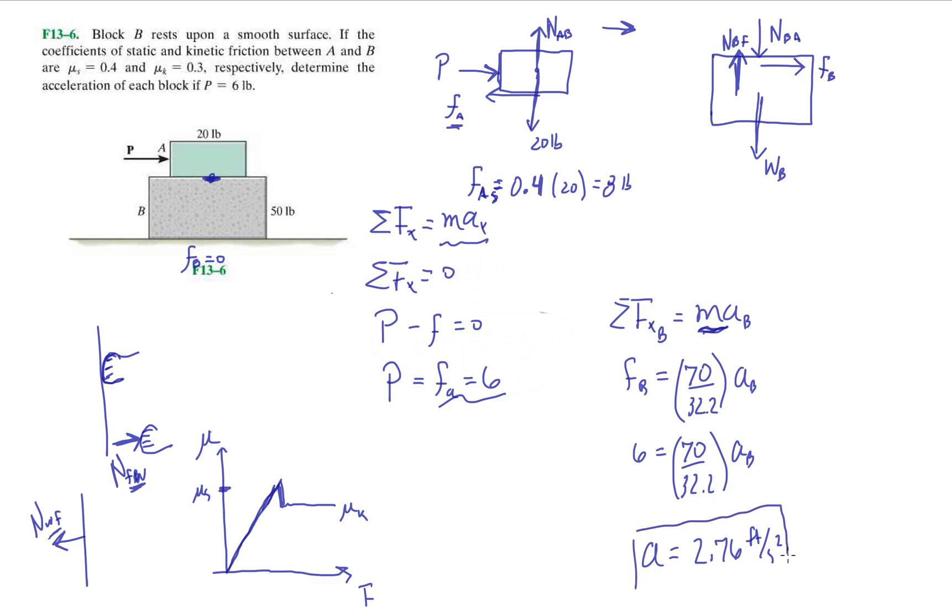So this is telling you that the entire system moves at 2.76. So the acceleration of A relative to B is 0. But if we look at the entire system together, because A is not even sliding, the whole system is accelerating at 2.76 feet per second squared. If you look at the entire system, we know A is not moving or sliding on top. So the whole system moves at that acceleration.